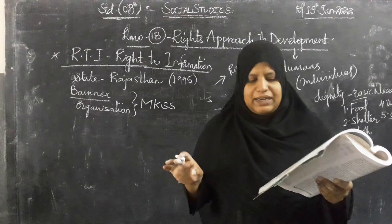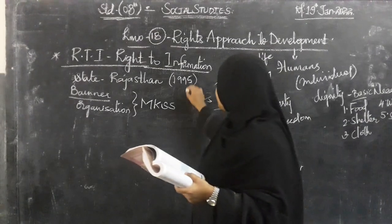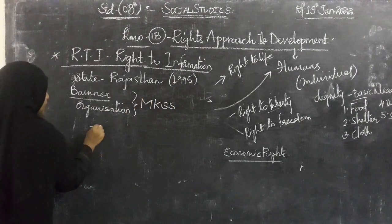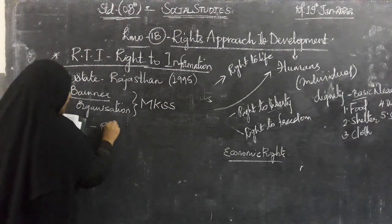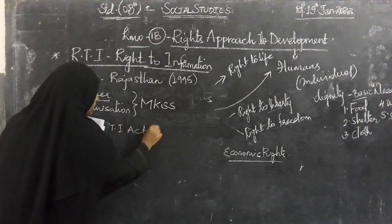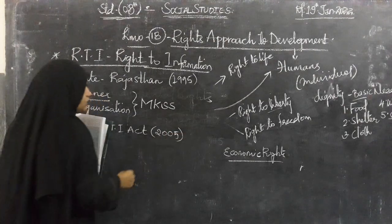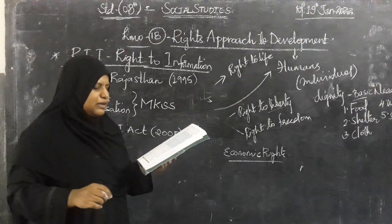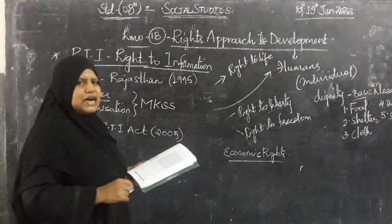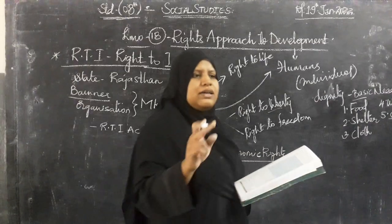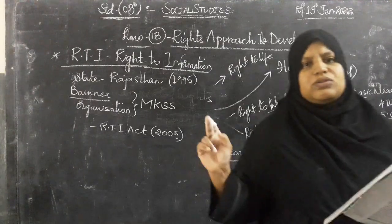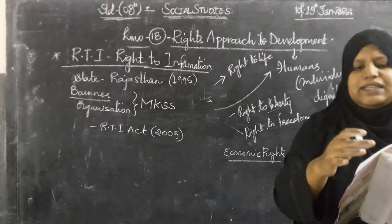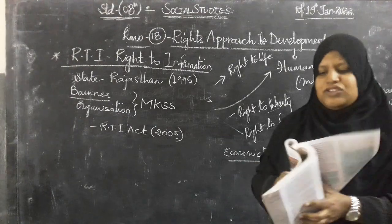Right to Information Act — this RTI Act, started in 1995 in Rajasthan, was followed by other states also. In this country, this RTI Act was officially passed in the year 2005. Till now, under this fundamental right of liberty and freedom, this RTI is also one of the important acts. It was passed in the year 2005, and it had already been done in Rajasthan and other states to get the information since 1995.